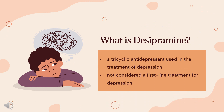What is desipramine? Desipramine, sold under the brand name Norpramin among others, is a tricyclic antidepressant used in the treatment of depression. The drug is not considered a first-line treatment for depression since the introduction of selective serotonin reuptake inhibitors (SSRIs), which have fewer side effects and are safer in overdose.